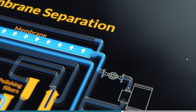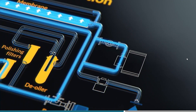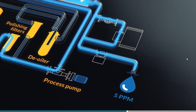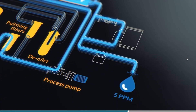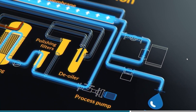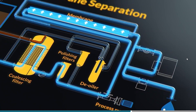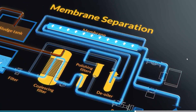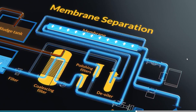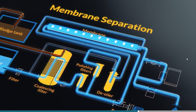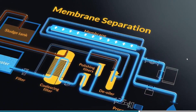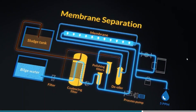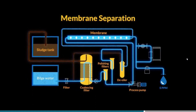The clean water passes through the oil monitoring equipment and overboard. The rejected water is directed back to a de-oiler reservoir, which removes the oil and sends the water through a filter and back to the process pump. The oil is sent back to the inlet side of the oily water separator, from where it will be discharged to the sludge tank.